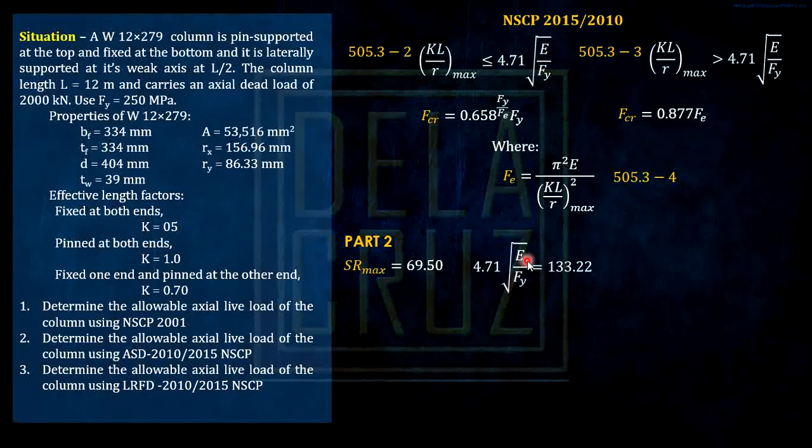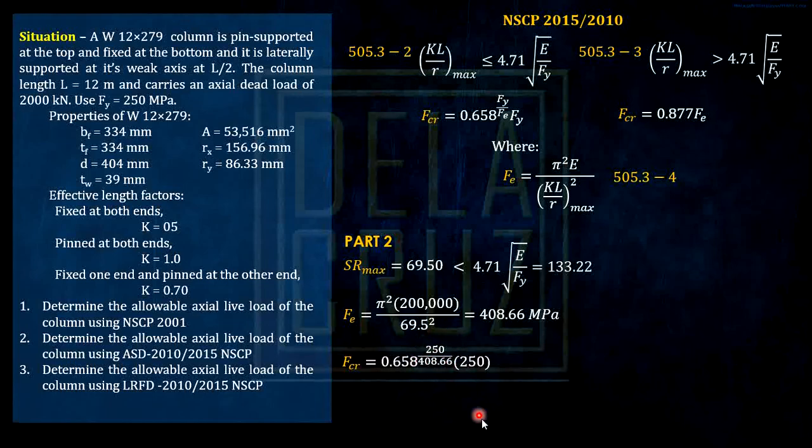Calculate this. Substitute: E is 200,000, FY is 250. So that is 133.22. As you can see, that is less than the maximum slenderness ratio, KL over R maximum. Therefore, the critical stress here is given by this formula. Let us solve first the FE, the Euler's critical buckling stress. FE is pi squared times 200,000, and SR or KLR maximum is 69.5, and we have 408.66 MPa. Then substitute to this formula. FY is 250, FE is 408.66 times FY. Take note, this is raised, this is an exponent. So we have FCR here, 193.53.